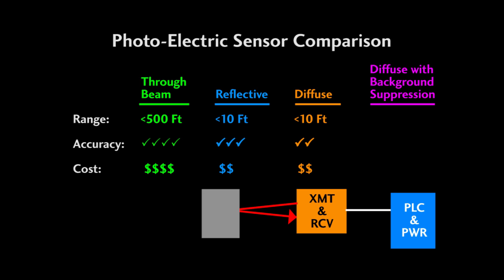Background activity can also produce false readings with this kind of sensor, which is where diffuse with background suppression comes in.